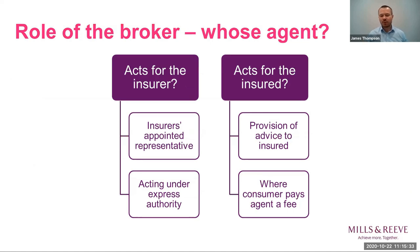The Act also provides useful guidance on the role of the broker and identifying whose agent the broker may be. Situations where a broker may be considered to act for the insurer include where the broker is the insurer's appointed representative or acting under express authority from insurers. Situations where the broker is considered to act for the insured include where the broker has provided advice to the insured or where the consumer is paying the broker a fee. The Act helpfully sets this out in a schedule as additional guidance where there may be a dispute about what role a broker was playing.